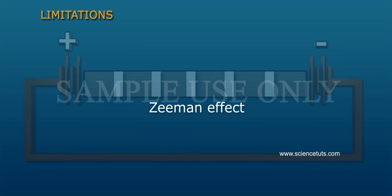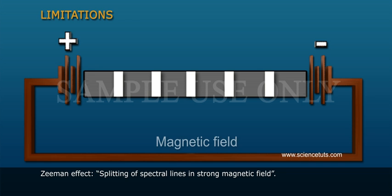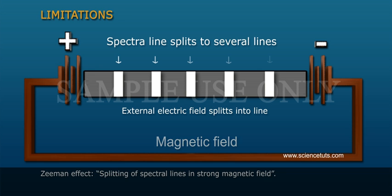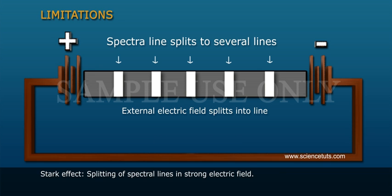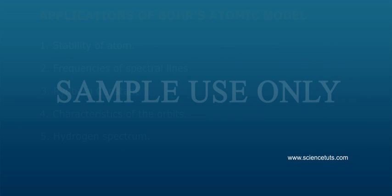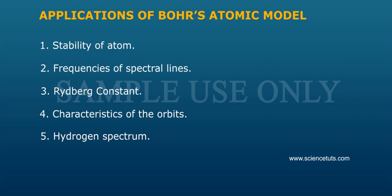Zeeman effect: splitting of spectral lines in strong magnetic field. Stark effect: splitting of spectral lines in strong electric field. Applications of Bohr's Atomic Model.